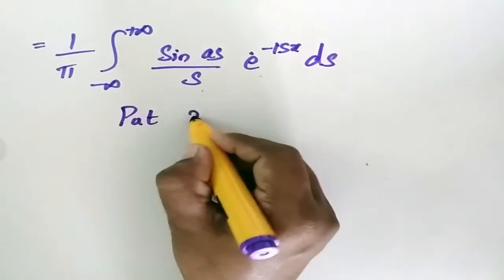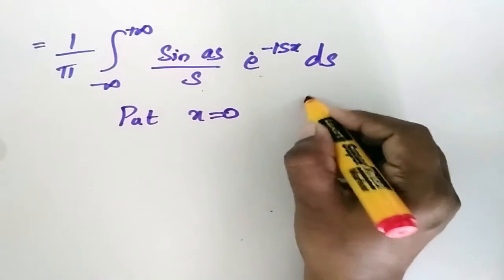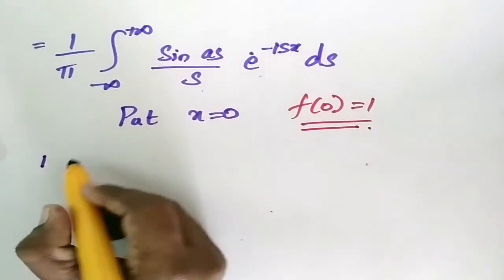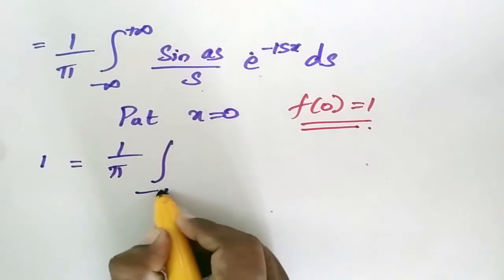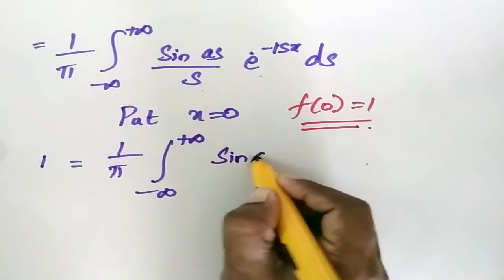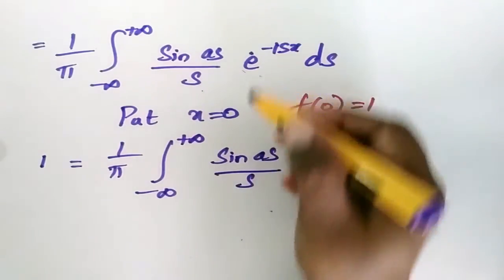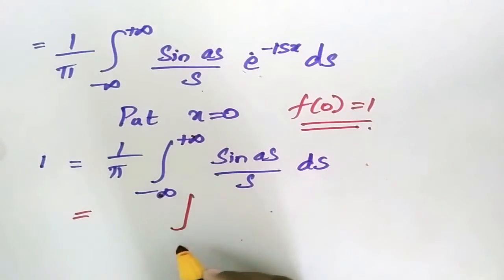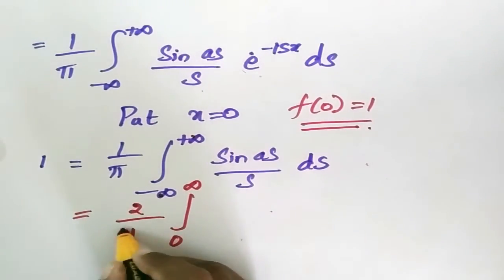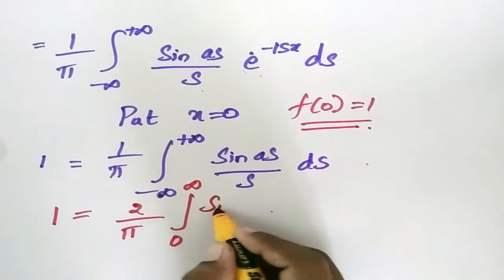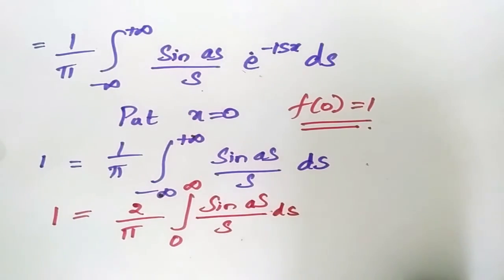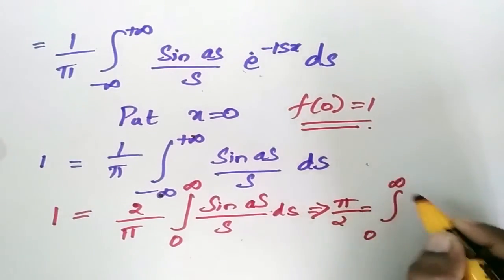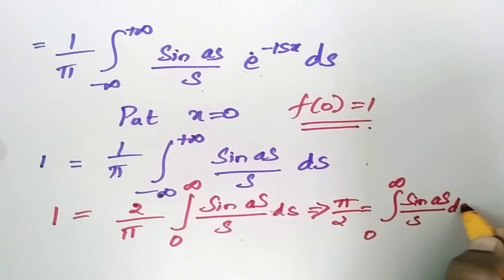Now put x equal to 0. Then f(0) equals 1. So we have 1 equals 1/π times the integral from minus infinity to plus infinity of sin(as)/s ds. Therefore, the integral from minus infinity to plus infinity of sin(as)/s ds equals π. By symmetry, the integral from 0 to infinity of sin(as)/s ds equals π/2.